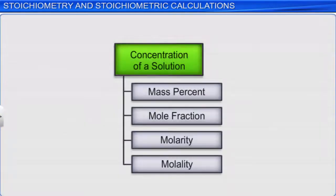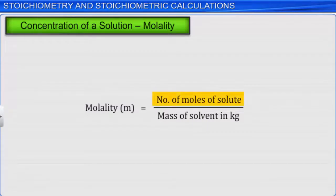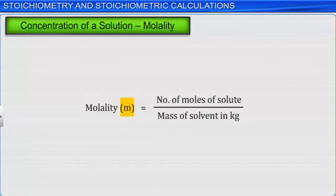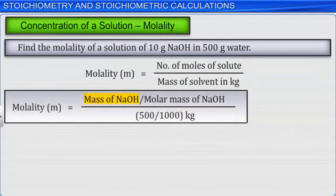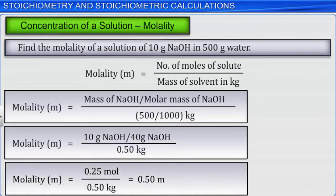Finally, let's look at molality. Molality is defined as the number of moles of a solute present in 1 kg of solvent, denoted as lowercase m. For example, to find the molality of a solution of 10 grams of sodium hydroxide in 500 grams of water, we divide the mass of sodium hydroxide by its molar mass and convert 500 grams of water to kilograms. After applying the formula, we get the molality of the solution as 0.50 m.